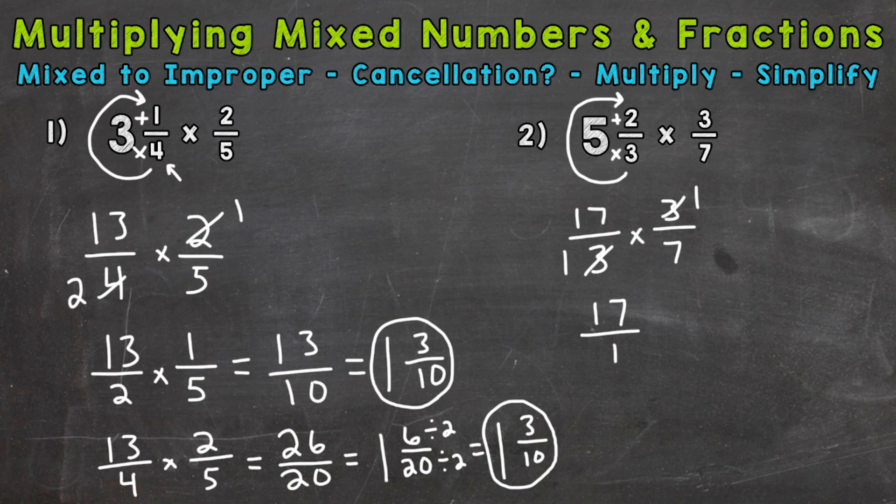So we have this problem here and we can multiply straight across. 17 times one is 17. And one times seven is seven. So we end up with an improper fraction, which we want to change back to a mixed number. So we need to do the numerator 17 divided by seven. How many whole groups of seven out of 17?